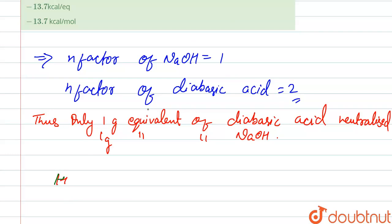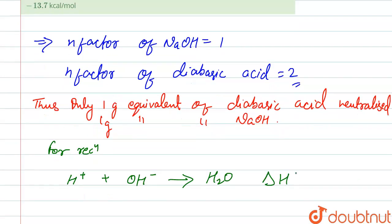So as we know, for the reaction, H+ from acid and OH- from base, it forms H2O. So here we know that delta H formation of water is minus 13.7 kilojoules per mole.